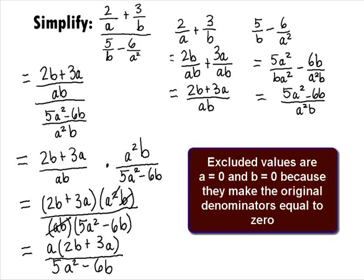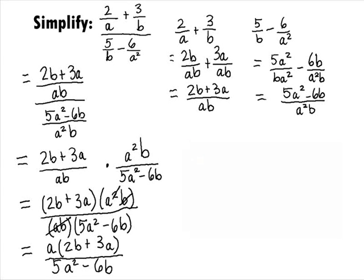Note that the values that would be excluded from the domain of the original rational expression are 0 for both a and b, since these values would make the original denominators equal to 0.